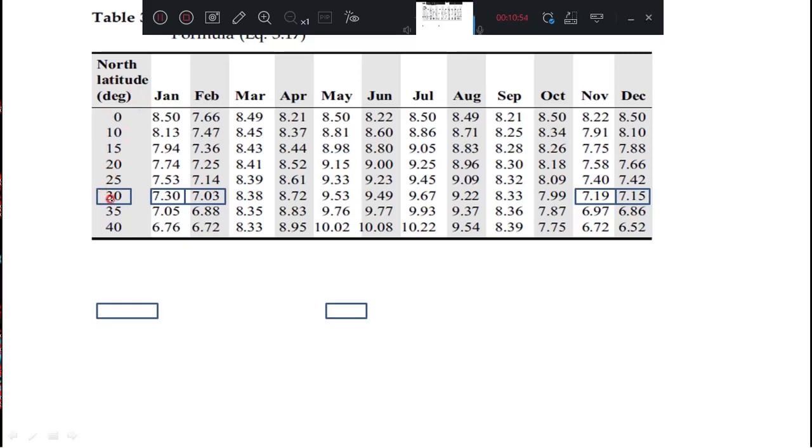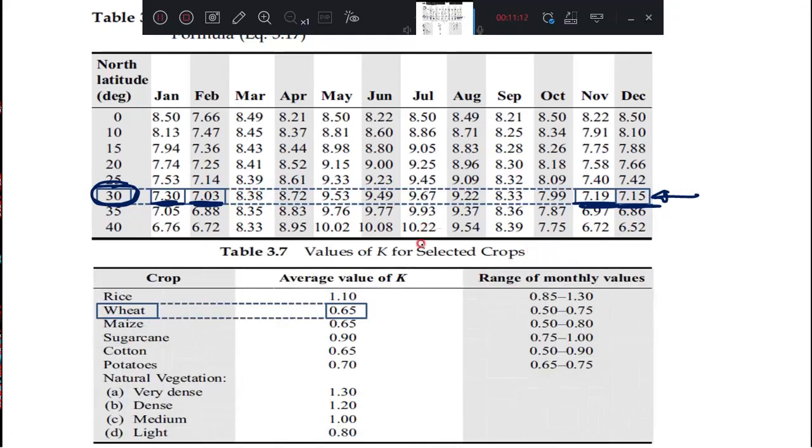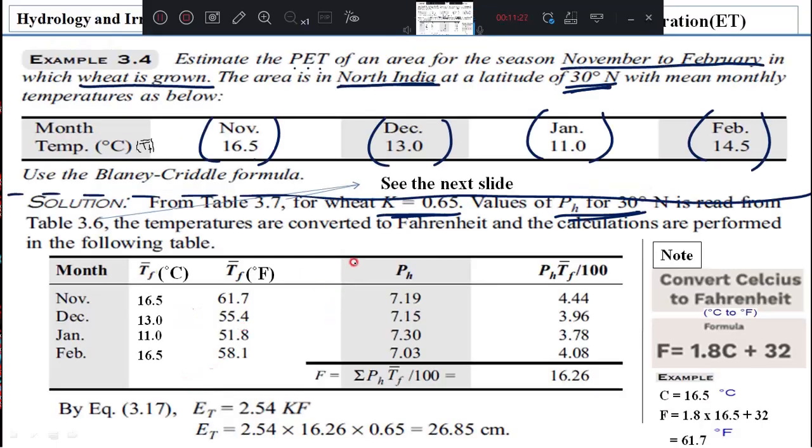See, this is the table. And in this table, we have in the 30th degree. January 7.3, February 7.03, November 7.17, December 7.15. We have four values. And these four values we will collect. And after that, we have the K value. This is your pH value. And K value for a particular crop. This is the crop, the wheat. For wheat, we have 0.65. And these informations you collect and write them here.